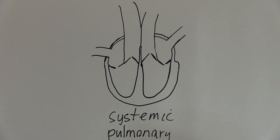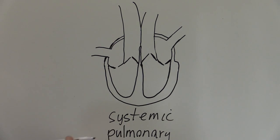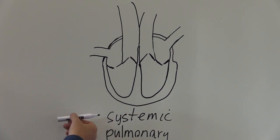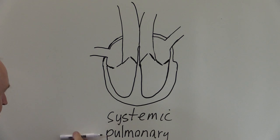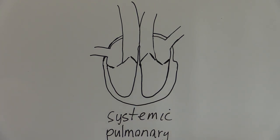We want to follow on now and consider the heart and the chambers and valves in the heart in relation to the systemic and the pulmonary circulation. The systemic circulation going to the body, the pulmonary circulation going to the lungs.